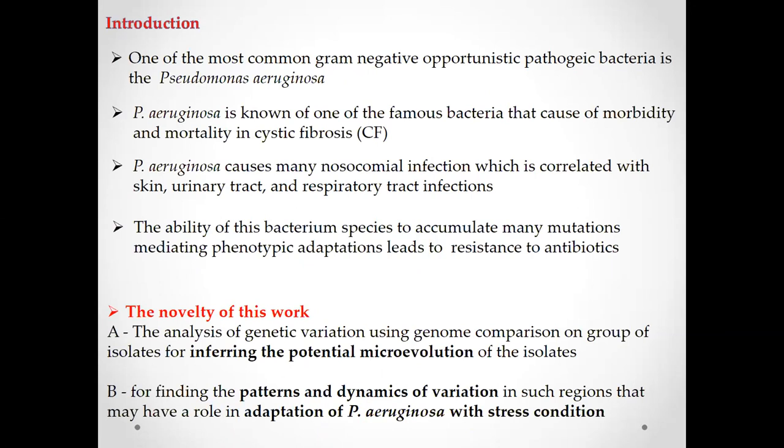Pseudomonas aeruginosa causes many nosocomial infections. Nosocomial infection means the infection exists in a certain location such as a hospital, and it causes infections such as skin, urinary tract, or respiratory tract infections. Pseudomonas aeruginosa is a highly mutant pathogen, and the mutation leads to antibiotic resistance. Therefore, Pseudomonas aeruginosa resists many antibiotics due to its ability to accumulate many mutations.